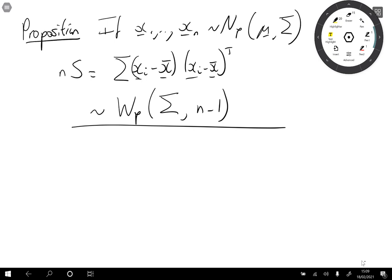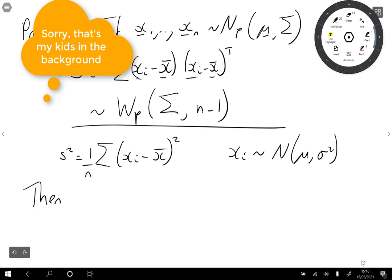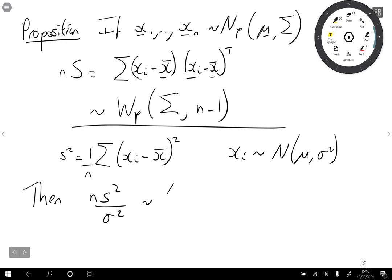So again, just to relate back to the univariate case, if s squared is the sum of the sample means of univariate vectors at xi, minus x bar all squared over n, and the xi's are all normal mu sigma squared, then n times s squared over sigma squared has a chi-squared n minus 1 distribution.